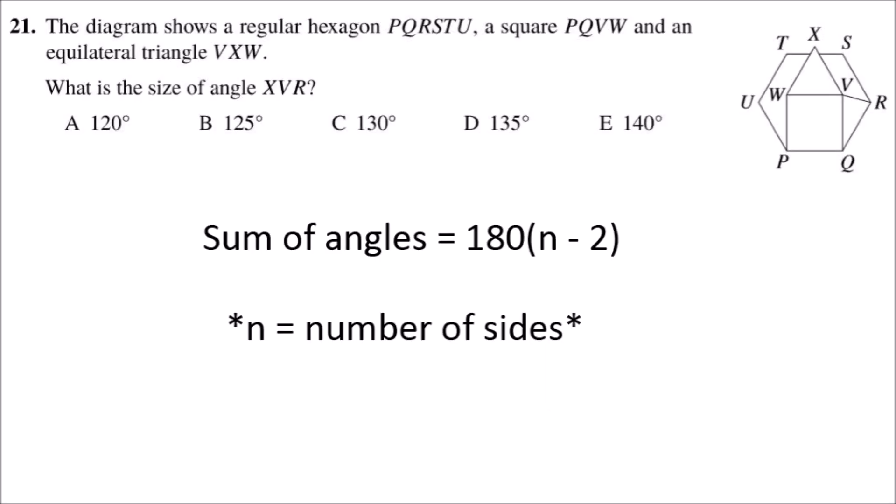To find the sum of angles in a shape you use the formula 180(n - 2). Then to find the single angle in that shape you have to divide by n, where n is the number of sides of the shape.